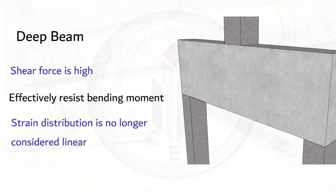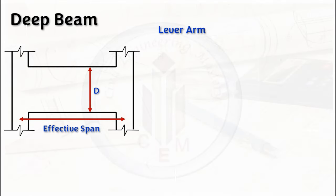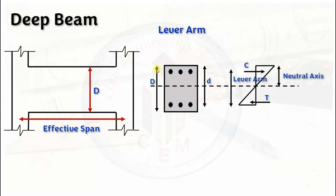In deep beams, the strain distribution is no longer considered as linear. Now let's look into the lever arm, which is given in clause 29.2 of IS 456-2000. Before looking at the empirical formula provided in the IS code, let's discuss a few basic things about lever arm. If you consider a beam, you have the overall depth and the effective depth.